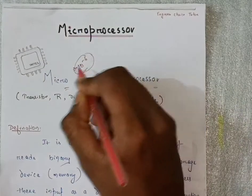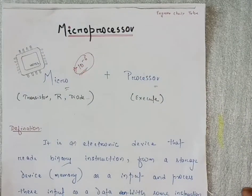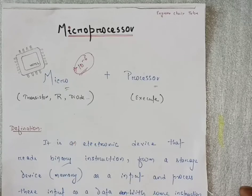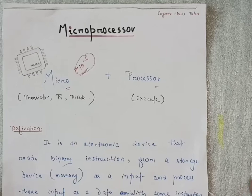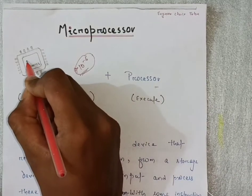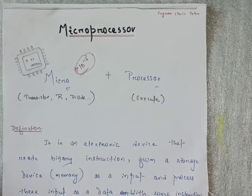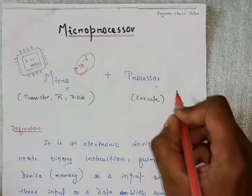The size will be 10 to the power minus 6 and the element means the component. There are millions of components that are fabricated on a single chip - many registers, many capacitors are present. What do you mean by the second word, processor?